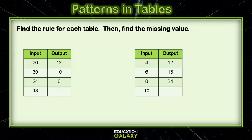In the first table, to get from 36 to 12 and from 30 to 10 and from 24 to 8, we want to see what we could do to each number to get the other number.